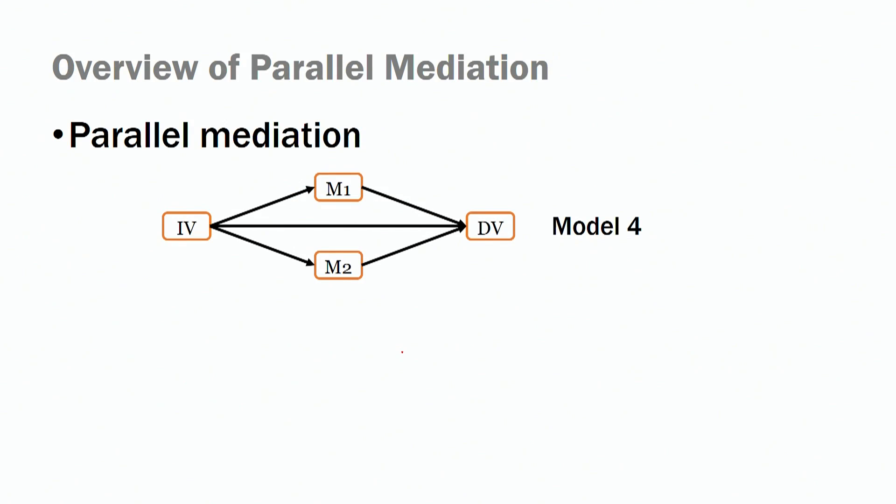Parallel mediation models have multiple parallel mediators. You could have three, four, five, or even more mediators than just two. In this example, we are adopting only two mediators in order to keep things simple. When you develop your theory, keep it parsimonious. If you start adding multiple mediators, your model will become too complex and too confusing to explain.